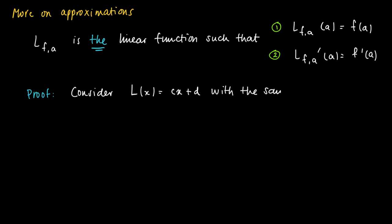Now suppose we have the green 1 and green 2 properties, so that we know that L in A equals F of A and L prime in A equals F prime in A.